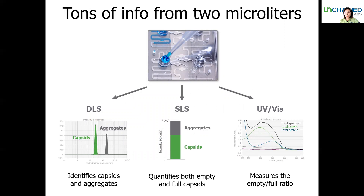How Stunner works is that you load 2 µL of sample into the input well of a standard plate. The sample is then pulled into microphotonic chambers and read with dynamic light scattering (DLS), static light scattering (SLS), and UV-Vis. The combination of these three techniques gives you titer, aggregation, and full/empty ratios. Since the pathway for each reading is fixed, the result is very precise and accurate.